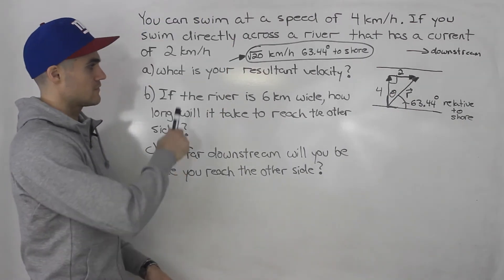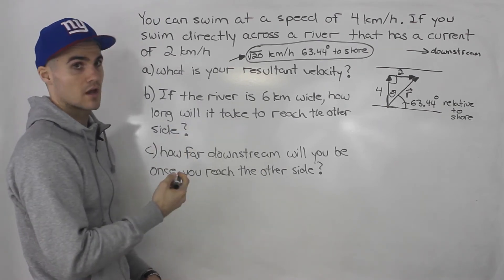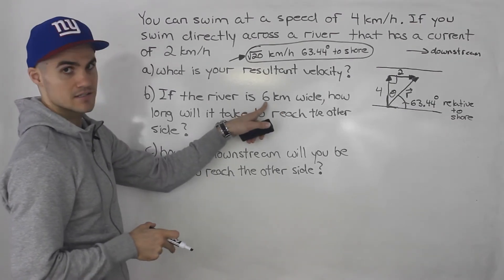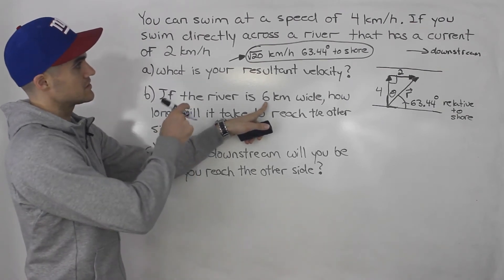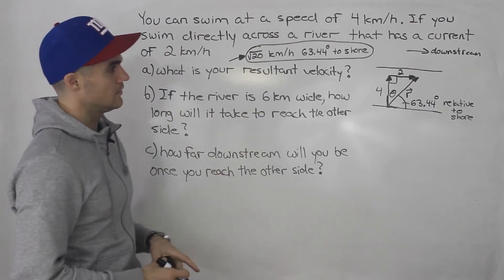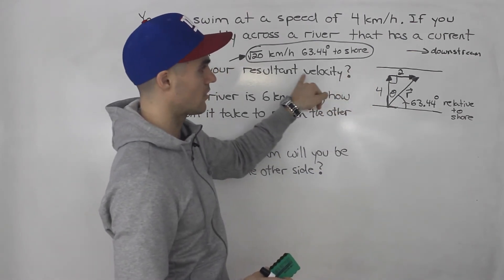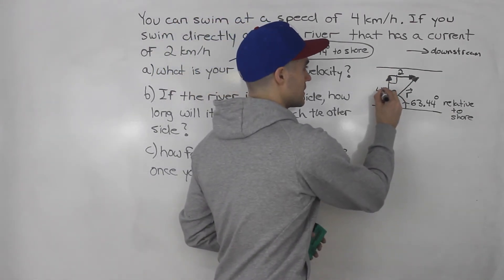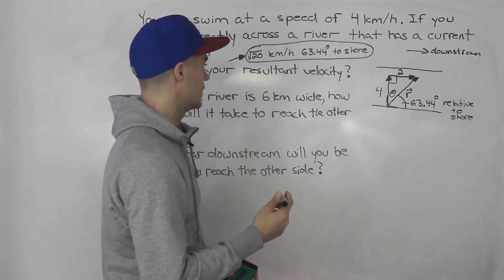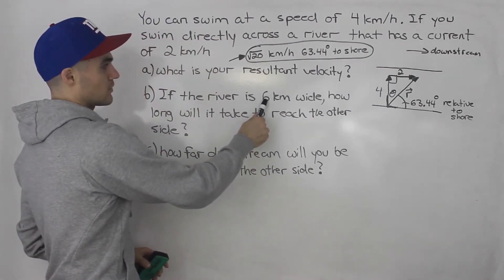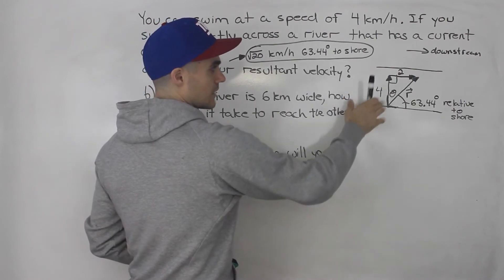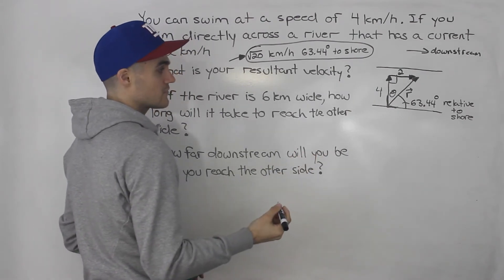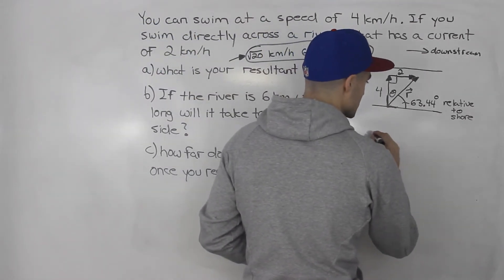Moving on to part B: if the river is 6 kilometers wide, how long will it take to reach the other side? Notice we're given a distance of 6 kilometers, but up until now we've been dealing with speeds. The diagram from part A deals with speeds in kilometers per hour, so we can't just put the 6 kilometers into that triangle. You actually have to make a separate triangle to answer this question.